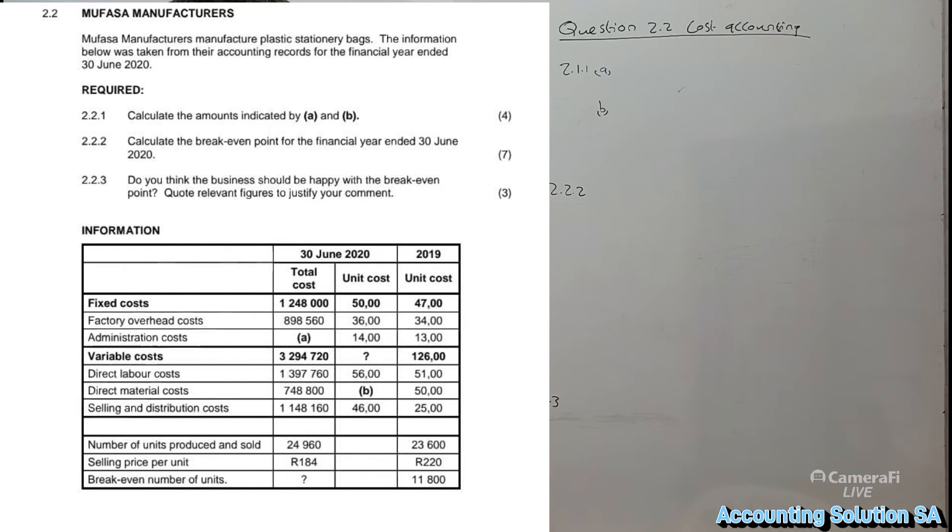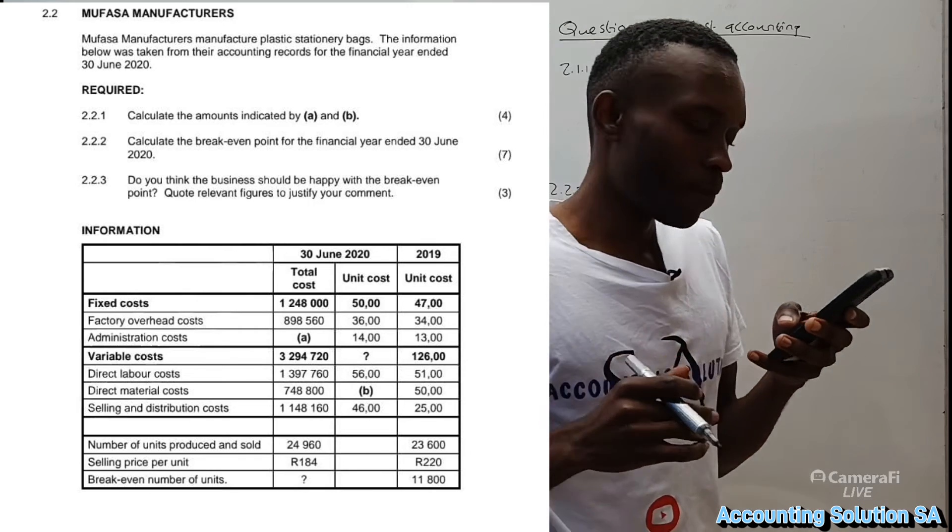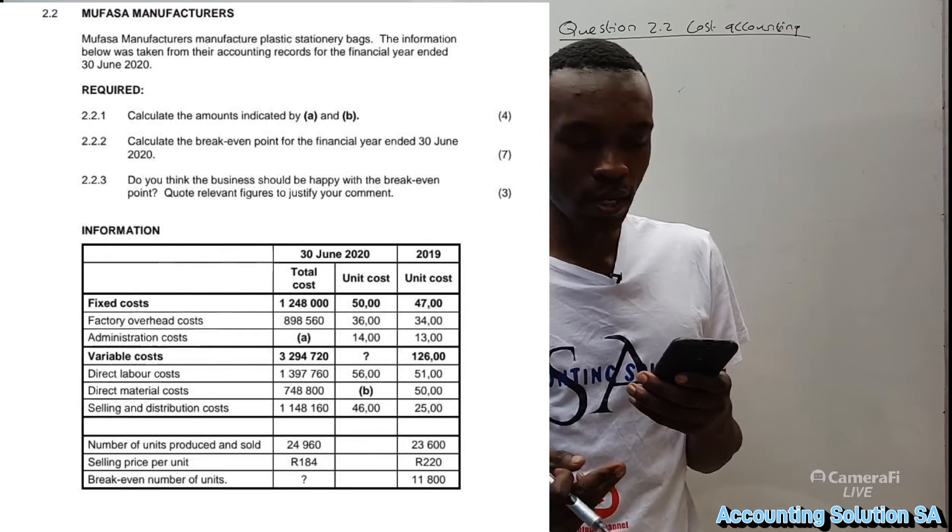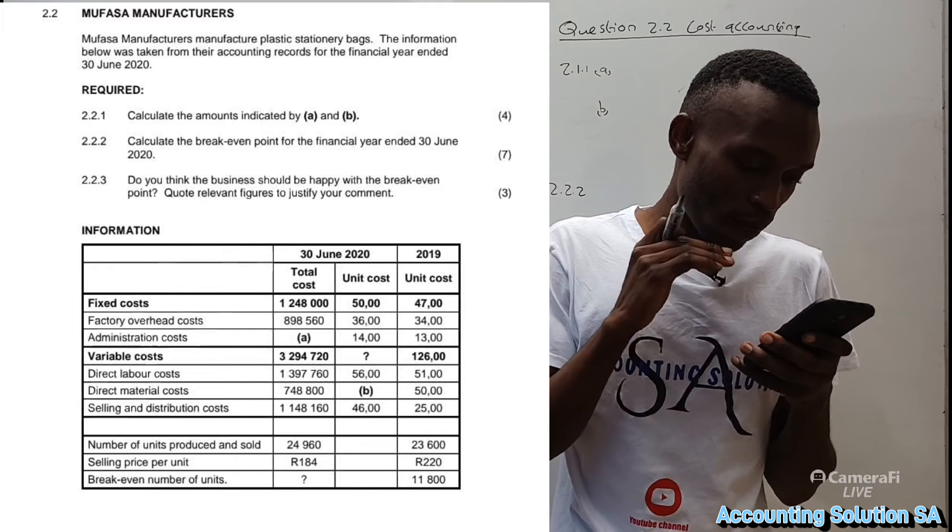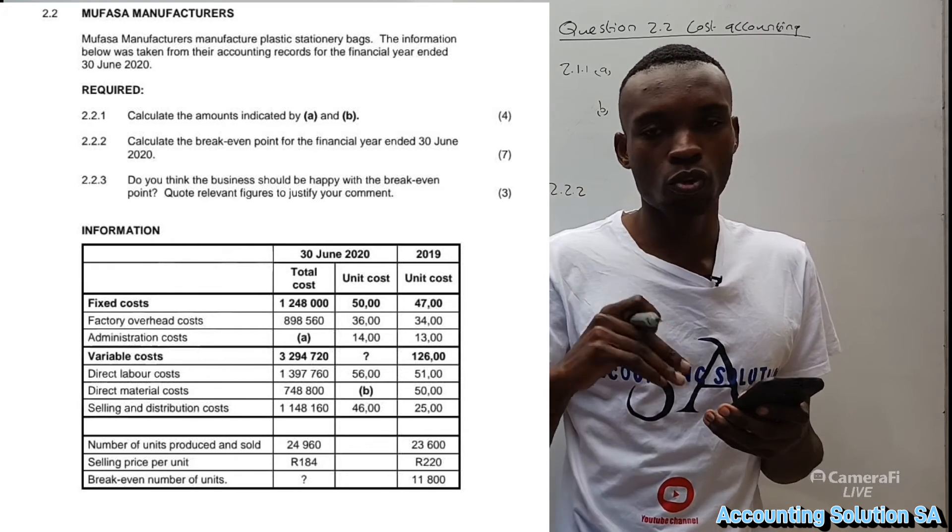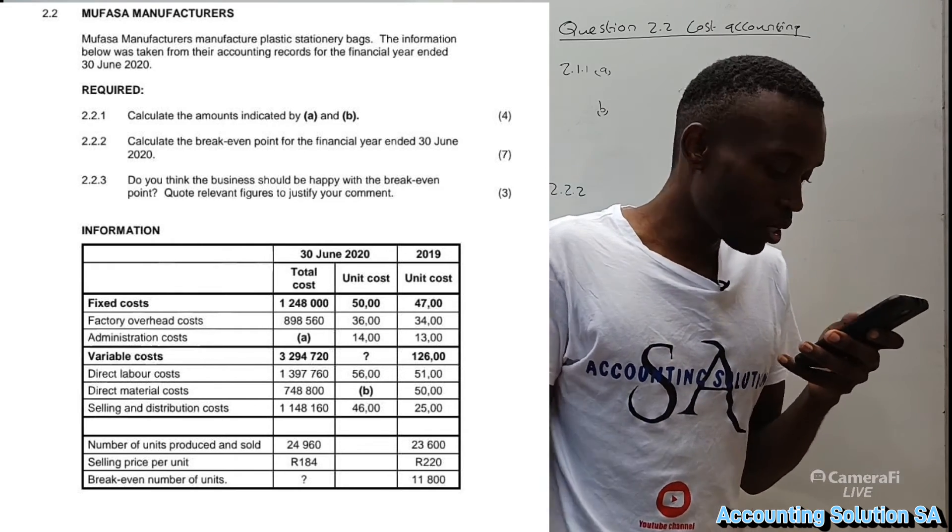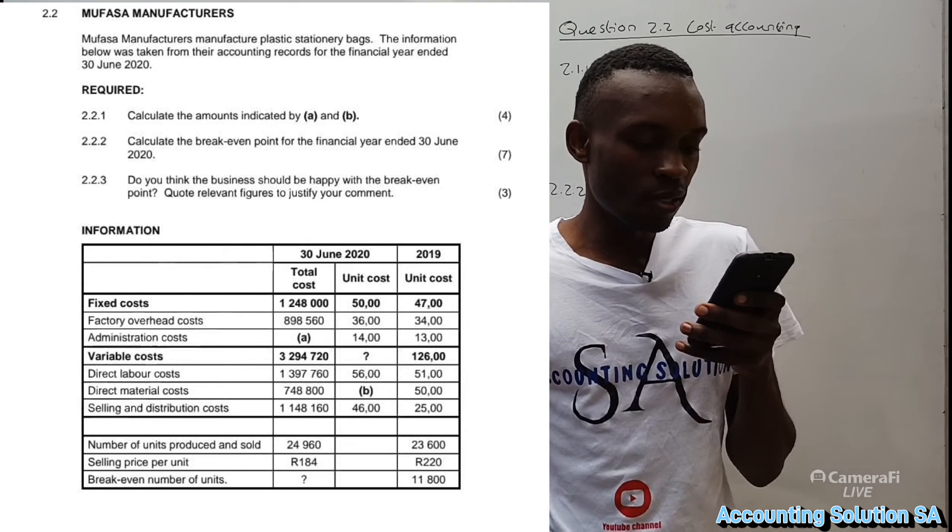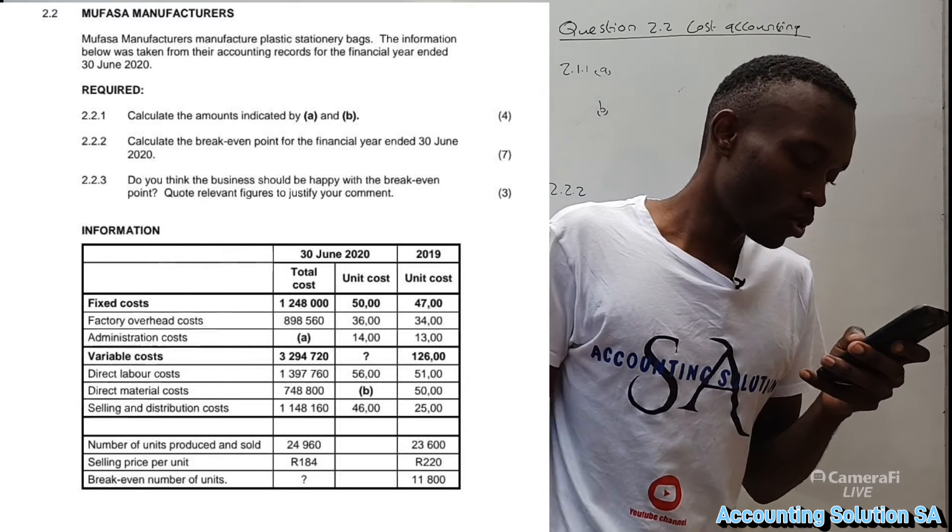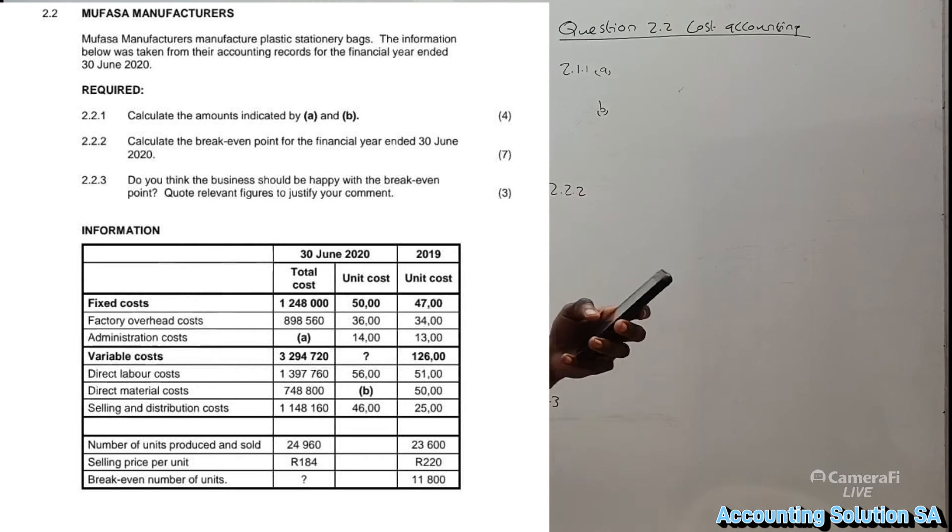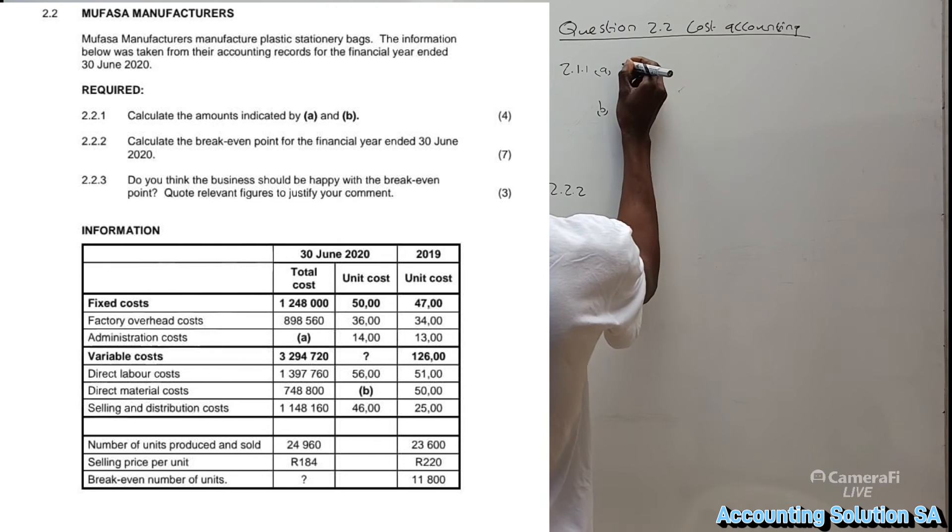Let's calculate 2.2.1 roman figure number A. If you check on the table, it's administration cost. But this administration cost is under fixed costs. Under fixed cost we have only two items which are factory overhead cost and administrative cost. They already gave us total fixed cost and factory overhead cost, but they didn't give us administrative cost, which means we can get it as a balancing figure.